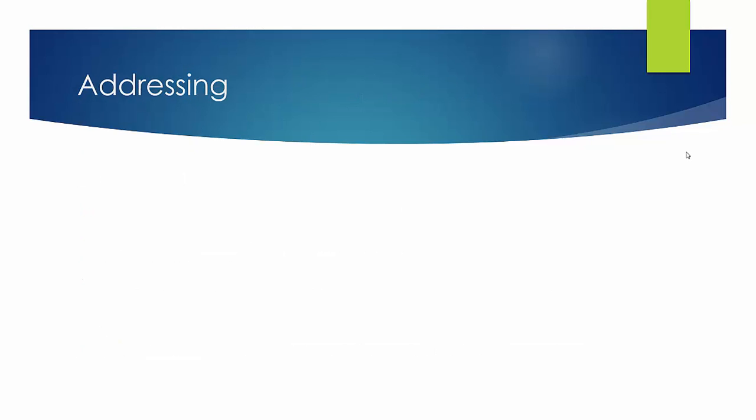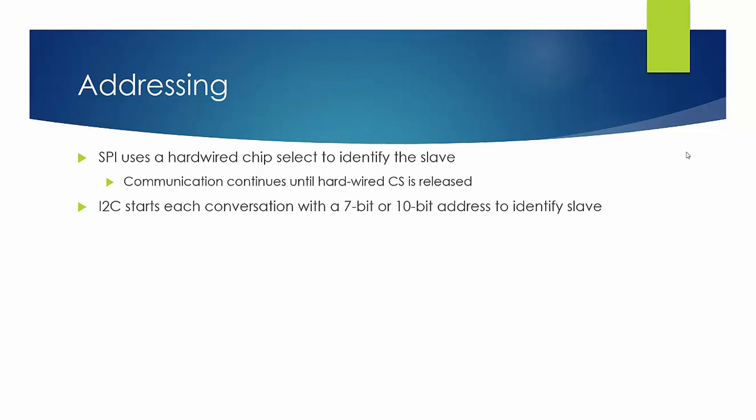So how does addressing work? So SPI, as you may know, uses a hardwired chip select to identify the slave. And communication with that slave continues until that hardwired chip select is released. I2C starts each conversation with either a 7-bit or a 10-bit address to identify which slave it wants to communicate with. And communication continues until the stop condition is sent by the master.